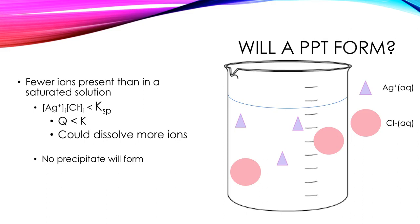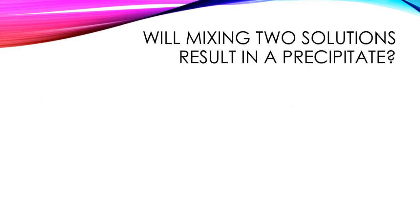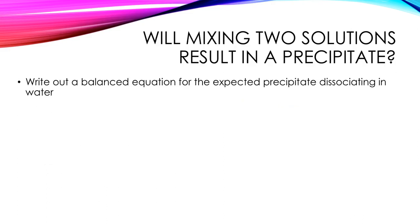So this leads us to being ready to actually do the KSP problems that we need to be able to solve. Here's our strategy. If I want to know, will mixing two solutions result in a precipitate? There are several steps we need to go through. If you're new to these kinds of problems, you might even want to consider writing down the list because it might be helpful to you.